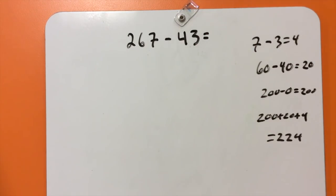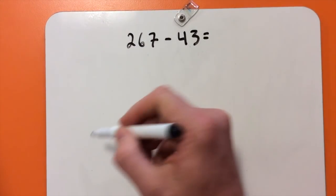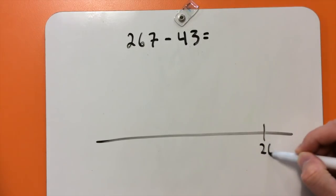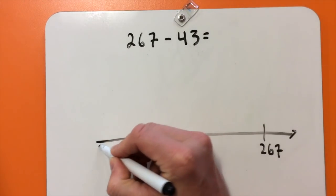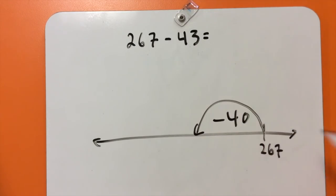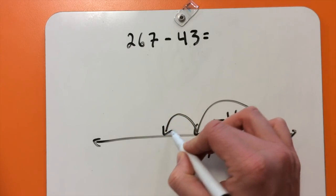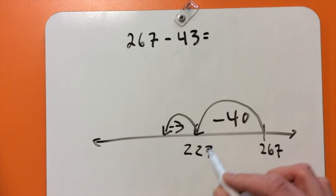To do that on a number line, again, I'm going to start at 267. And I'm going to take away my 4 tens. So that is 227. And then I'm going to take away 3 more, which is 224.